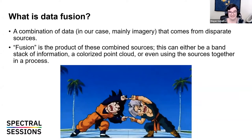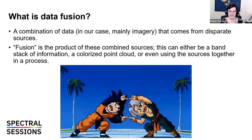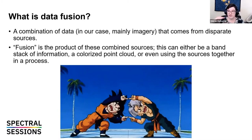A really common one that you might not think of as data fusion is a colorized point cloud. When you have a LiDAR scan and also a camera involved, and you colorize those point cloud pieces, that is a data fusion technique — you have two separate kinds of information stacked on top of each other. Lastly, a more disparate kind of data fusion is using sources together in a process: if you're using one kind of imagery or sensor for one step, then further along you use another one on top of that, that is also data fusion.